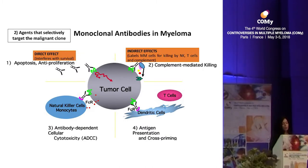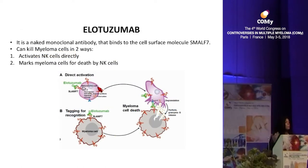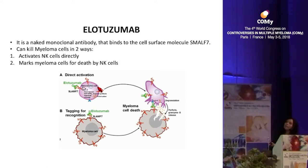Moving on to the second strategy: agents that selectively target the malignant clone — the monoclonal antibodies. These target receptors expressed by tumor cells, killing directly and enabling myeloma cells to be killed by NK cells, T cells, and complement. One example is elotuzumab, a monoclonal antibody targeting SLAMF7 — previously called CS1 — expressed on myeloma cells and NK cells. This antibody can kill directly and tag myeloma cells for recognition by NK cells.